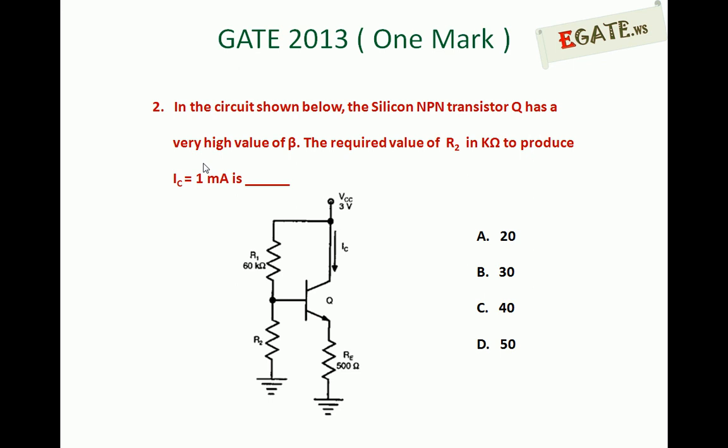Reading the question again: For the circuit shown below, the silicon NPN transistor has a very high value of beta. We need to calculate the resistance value R2 so that the collector current is going to be 1 milliampere. The right answer for this question is C, 40 kilo ohms. If we place R2 as 40 kilo ohms, the current flowing through the collector is 1 milliampere. We will see how to calculate this.